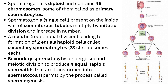A meiotic reductional division leads to the formation of two equal haploid cells called secondary spermatocytes. Haploid means half the number of total chromosomes in a diploid cell — in humans that is 46, so haploid is 23 chromosomes each. The secondary spermatocytes undergo a second meiotic division to produce four equal haploid spermatids.